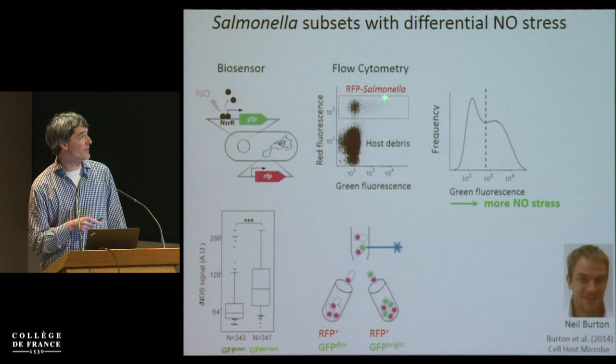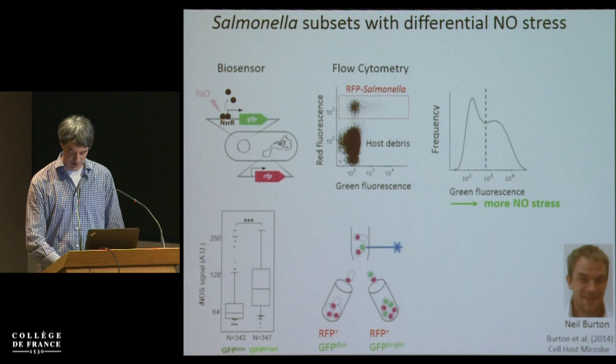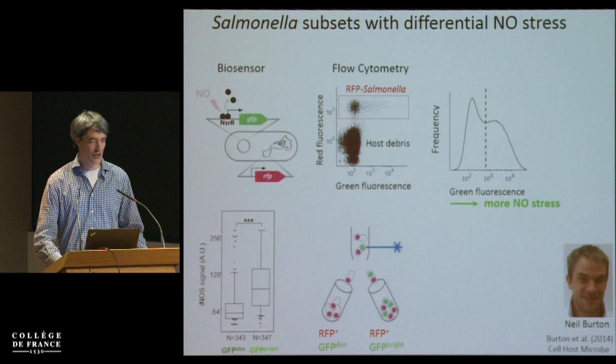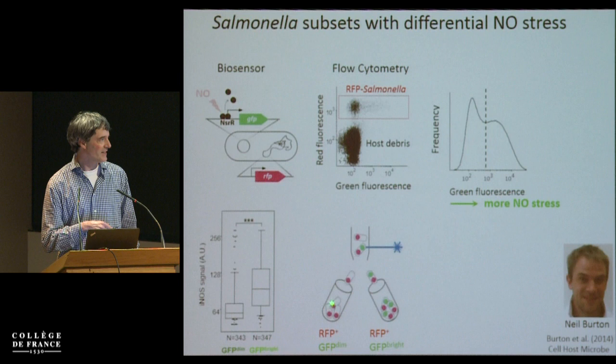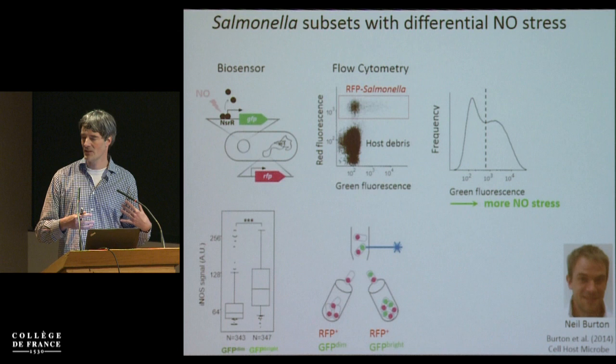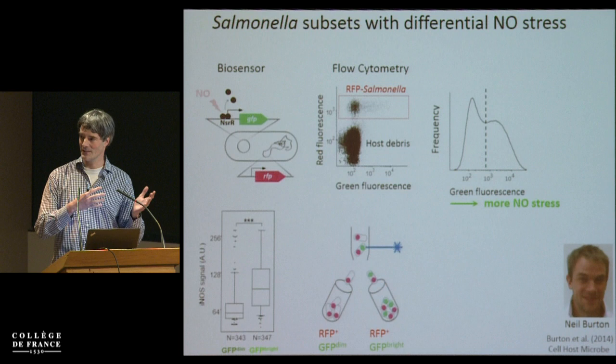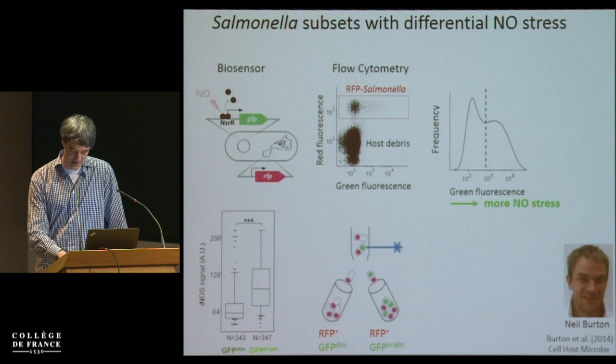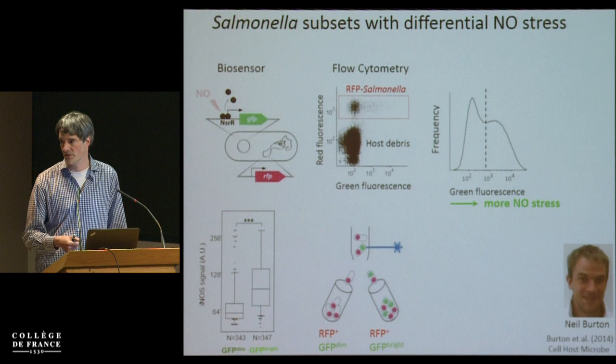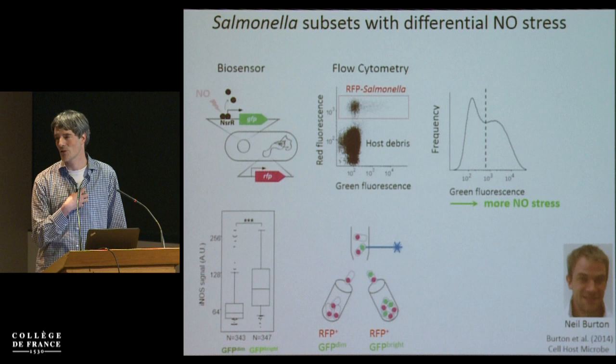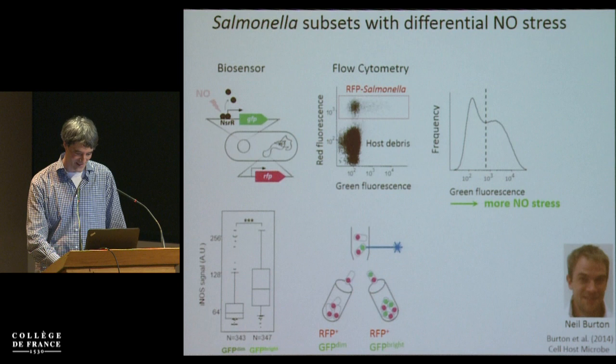In the same tissue at the same time, we have bacteria exposed to NO and others not exposed, so we can compare the impact of NO on bacterial physiology and gene expression by sorting. We separate only-red from green-and-red bacteria using a FACS sorter. We then use a very good proteomics core facility that can work even with our crappy samples — there is a 10,000-fold excess of host material, so even after 1,000-fold enrichment, there is still 10-fold more host protein than bacterial protein.